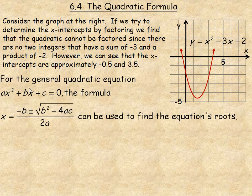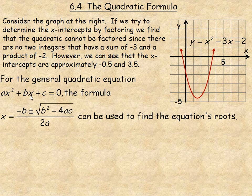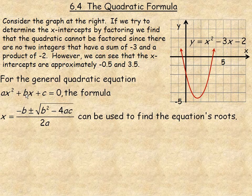A quadratic equation always looks something like this when rearranged and set equal to 0. There is a quadratic term — ax squared, where a is the coefficient of the quadratic term — plus bx, called the linear term with coefficient b, plus some constant c at the end. So ax squared plus bx plus c equals 0 is, in general, what a quadratic equation looks like.